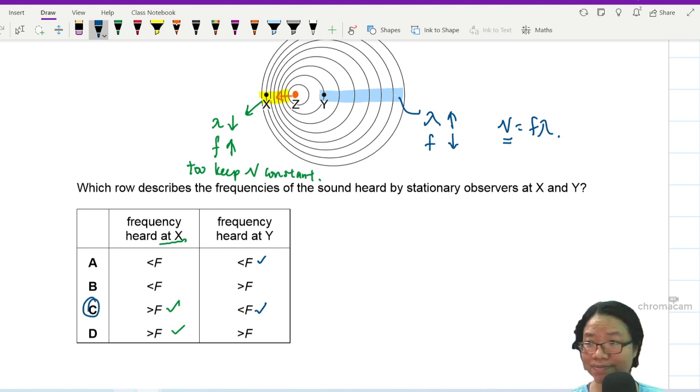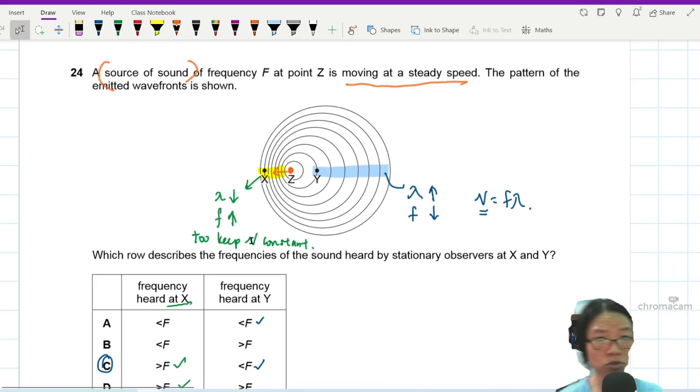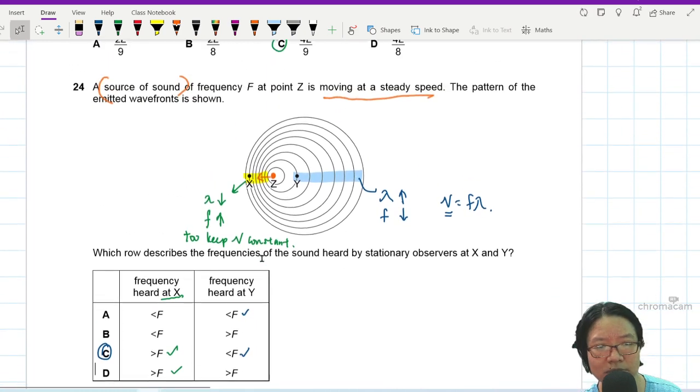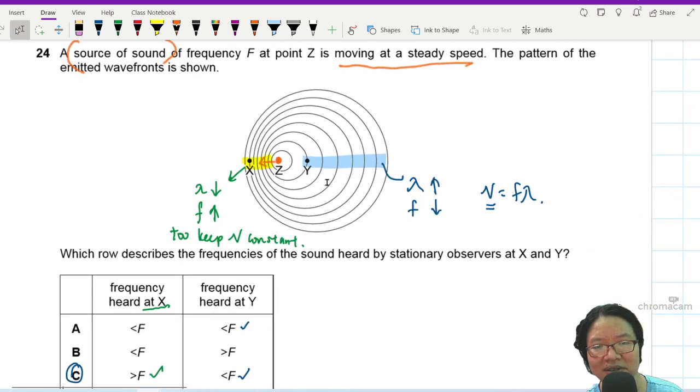So the answer is C. Pretty straightforward. If you need to do some calculation question, there are many in past years, so go try them out. The equation is also given in the formula list. But this one is just testing your concept and understanding.